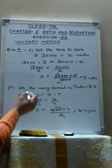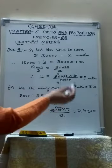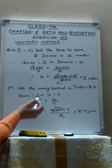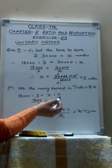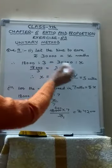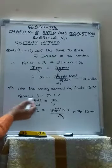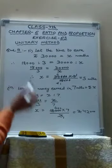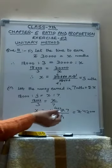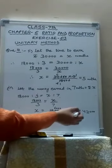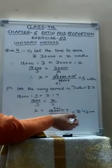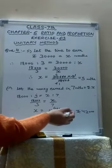Second part is now we have to find the money which he earns in 7 months. So let the money earned in 7 months be rupees X. Then 18,000 ratio 3 equals to X ratio 7. See here, we have put X here at the extreme because these are the months and these are the money. So money, money, months, months. 18,000 upon 3 equals to X upon 7. So X becomes 18,000 into 7 upon 3. We cut it, so we will obtain rupees 42,000. So the money earned in 7 months is rupees 42,000.